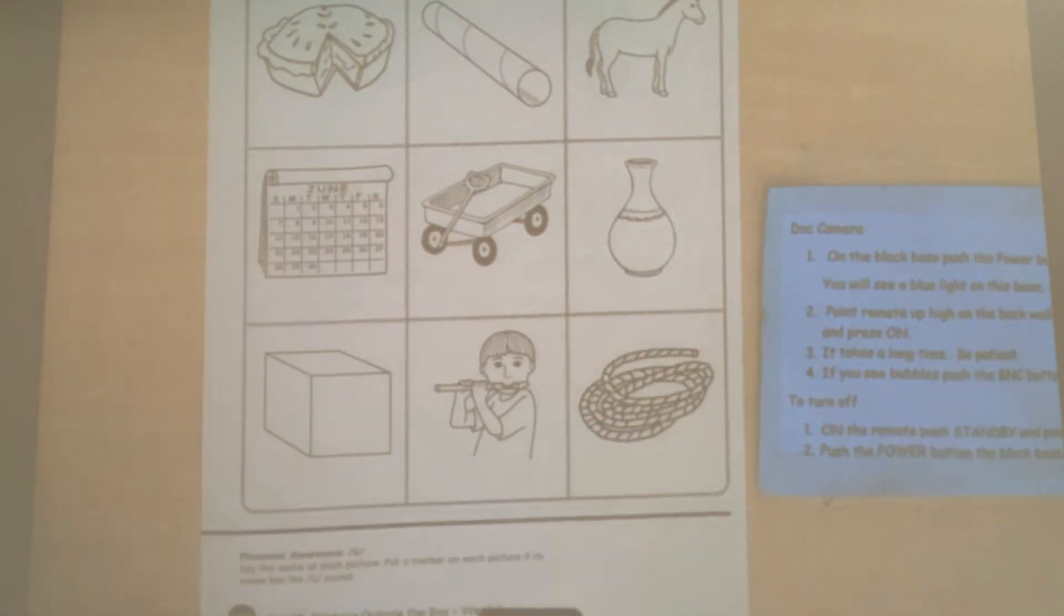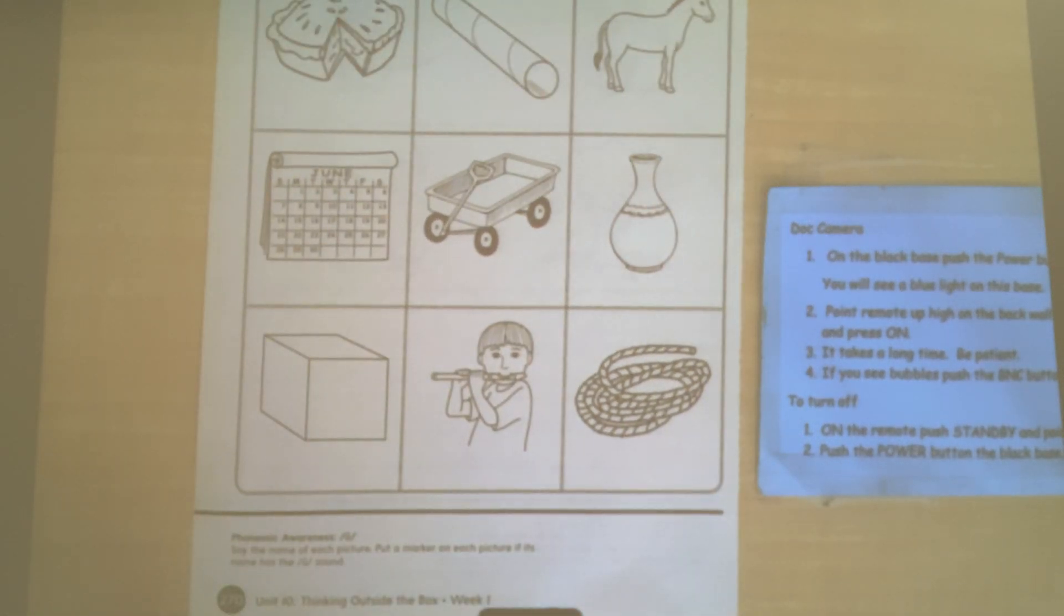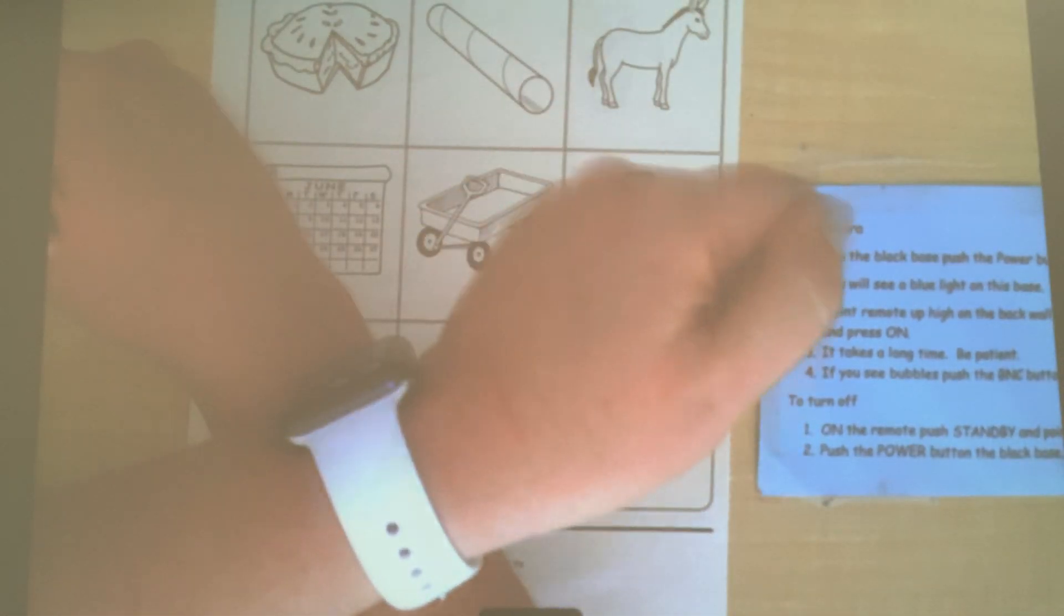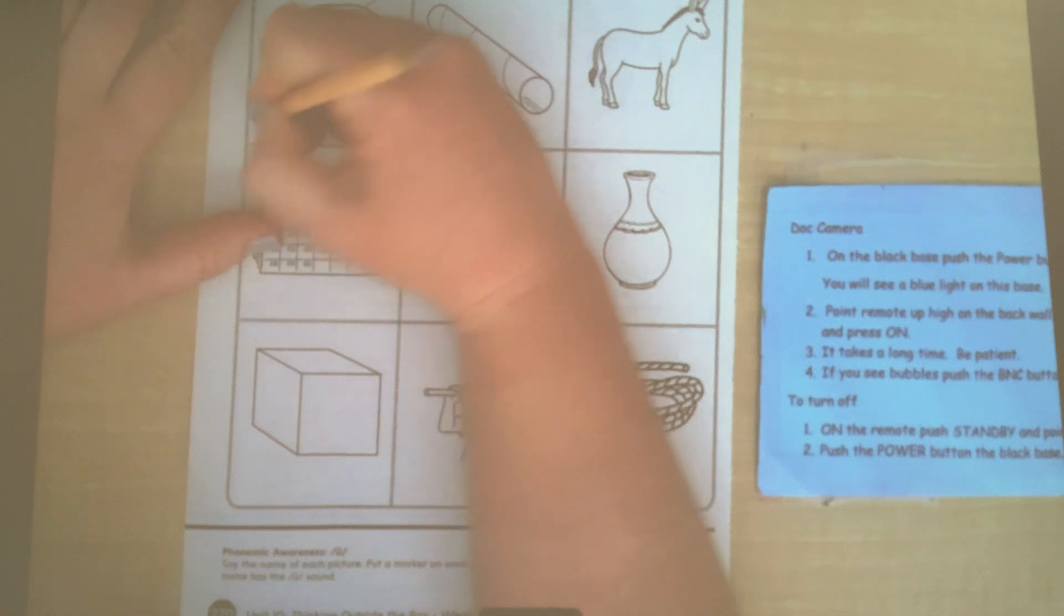We're going to start on page 270 first. What we're looking for here of course is the U or OOO sound which is the long vowel U sound. It is usually brought on by the bossy E. Alright, let's look through these. Pi. Pi. Cross that out.